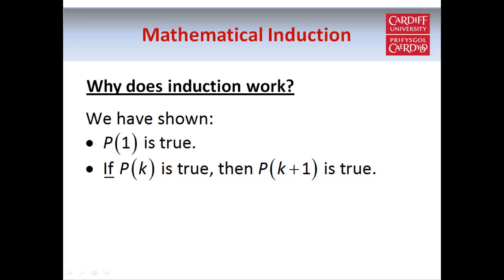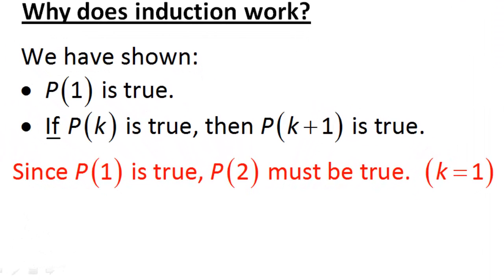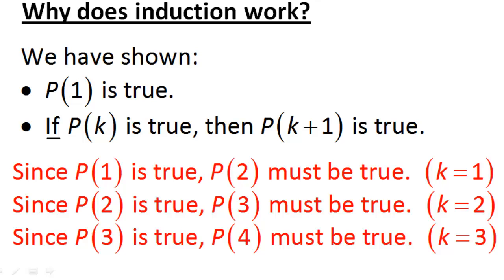In fact, this is all we need to do, because using these two facts, we can say that since p1 is true, that means p2 must be true, and since p2 is true, that means p3 must be true. You can keep this argument going on and on, and say that pn is true for any natural number n.